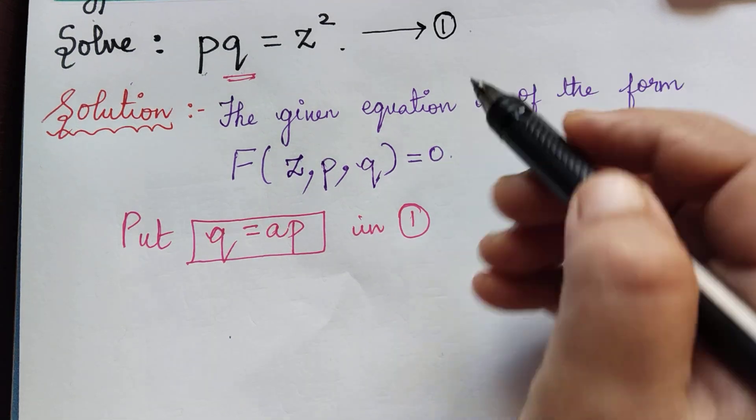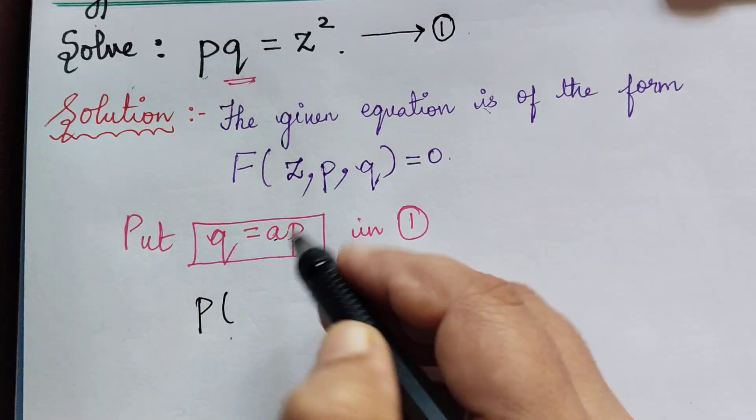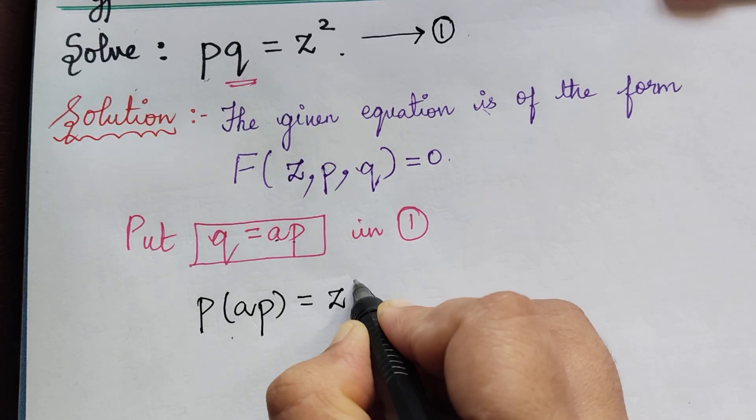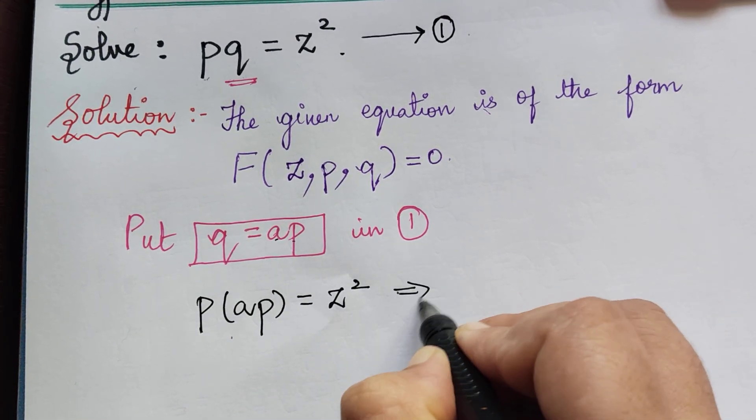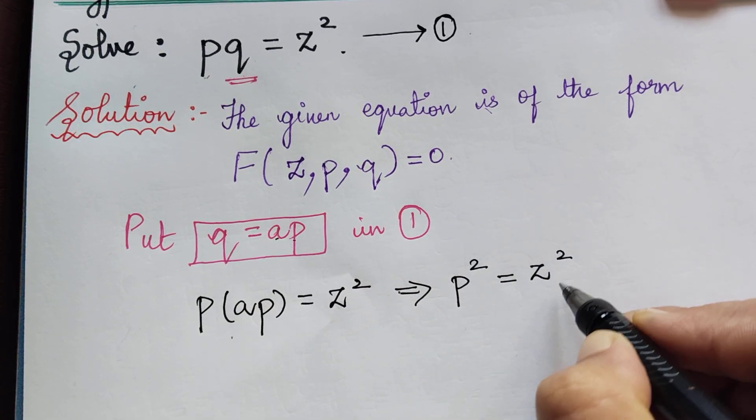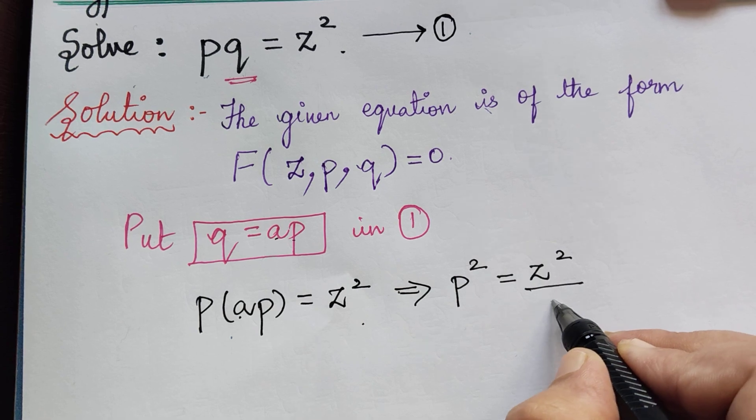Equation 1 can be written as P multiplied with Q, which is AP. So AP = Z². From this, we can write P² = Z²/A when A comes to the right, it comes to the denominator.